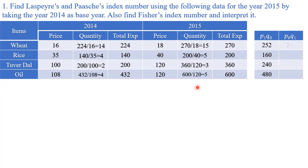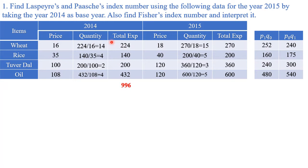Don't just copy what I am showing on screen — try it on your own and then check whether you are correct. Make totals of p0·q0, p1·q1, p1·q0, and p0·q1. These four totals are what we require for calculating Laspeyres', Paasche's, and Fisher's index numbers.